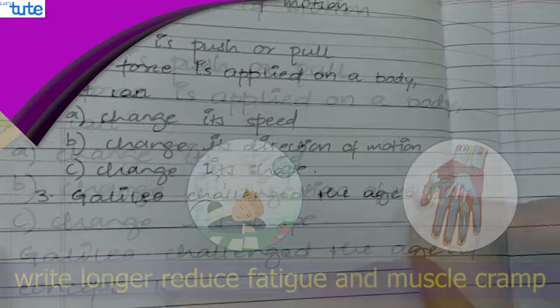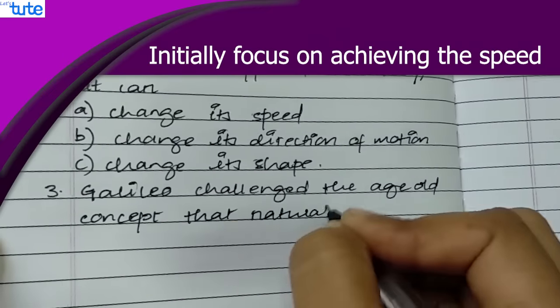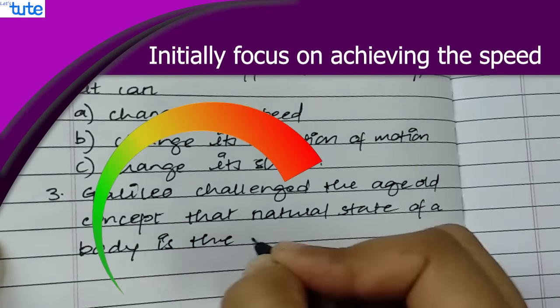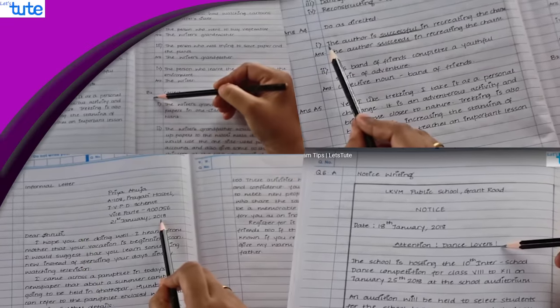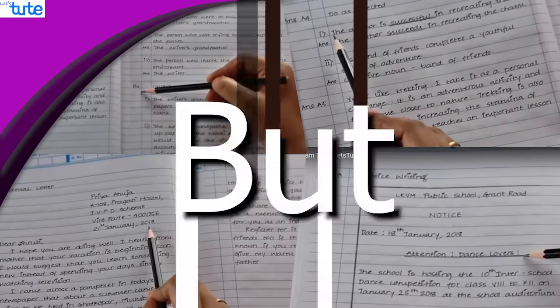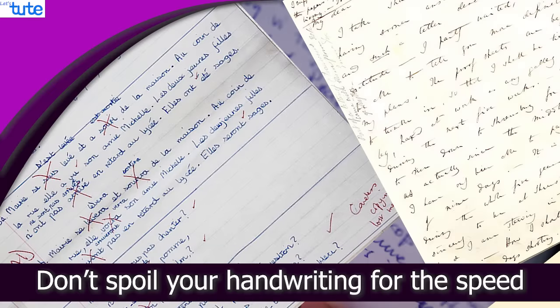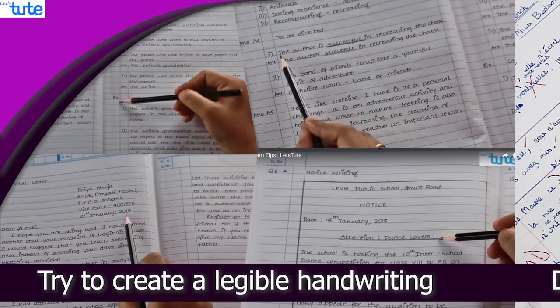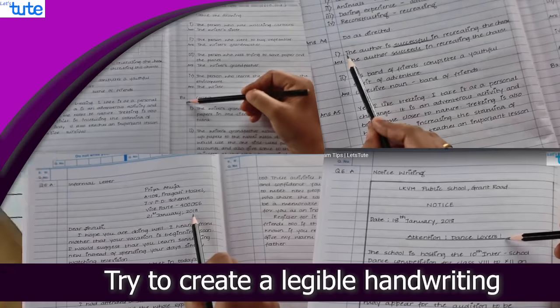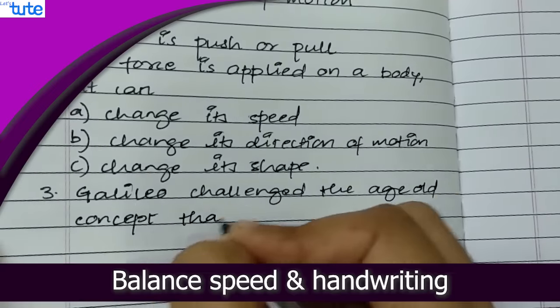Use a soft grip and normal pressure as it will help us write longer and reduce fatigue and muscle cramp. Friends, I would suggest you to initially focus on achieving the speed and then improve the presentation and handwriting part. But don't spoil your handwriting for the speed. Try to create a legible handwriting. Try to balance your speed and your handwriting.